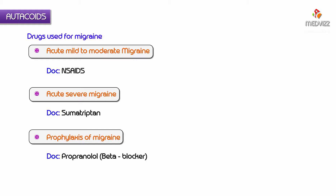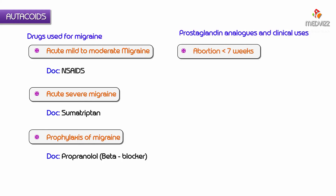Now let's discuss drug of choices where we use prostaglandins or prostaglandin analogues and their clinical uses. For abortion less than seven weeks, the drug of choice is mifepristone plus misoprostol — they are the drug of choice for abortion for less than seven weeks.